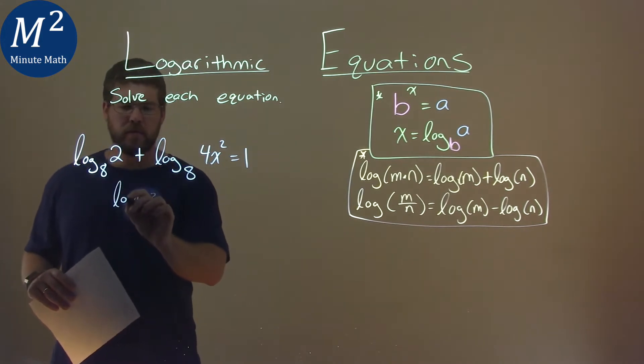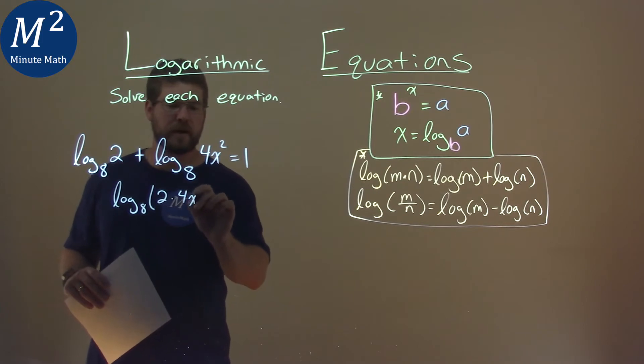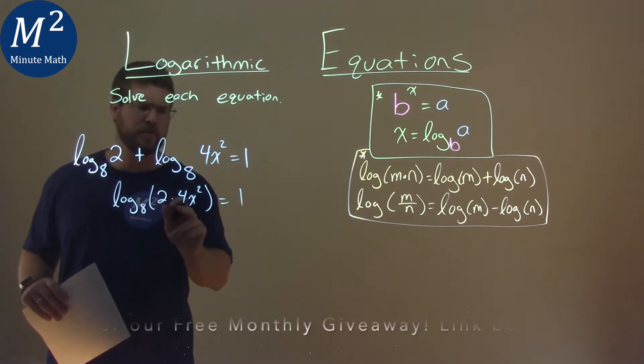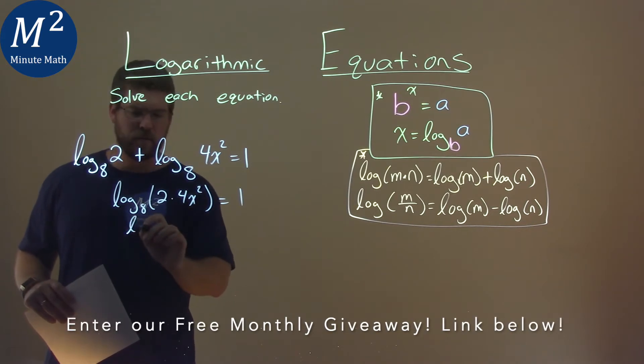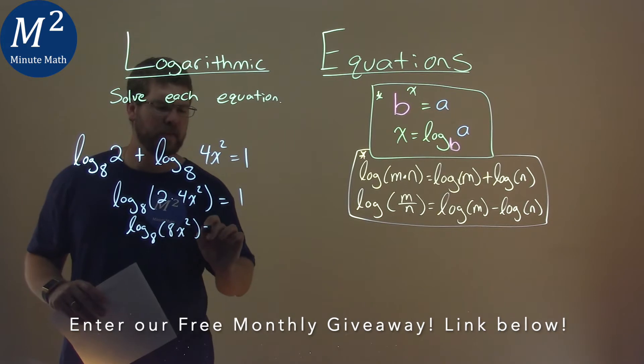So to do that, we have log base 8 of 2 times the 4x squared here, and now that's still going to be equal to 1. Well, 2 times 4 is 8, so we have log base 8 of 8x squared, and that's equal to 1.